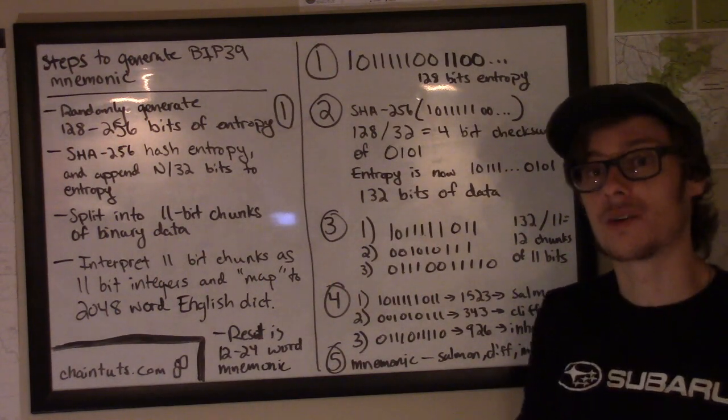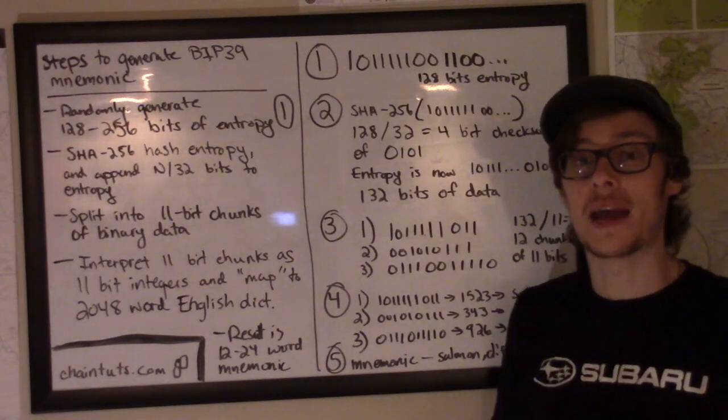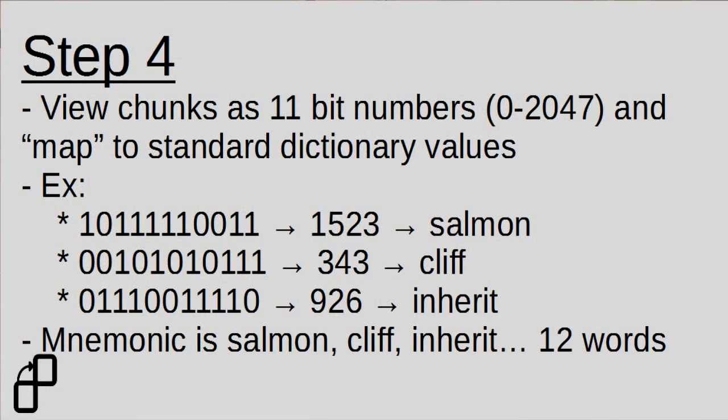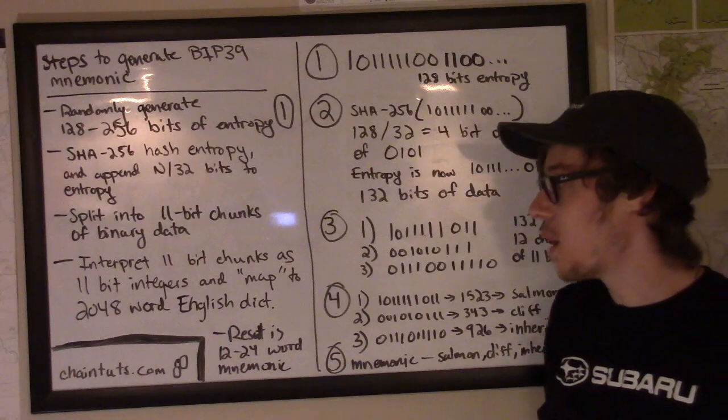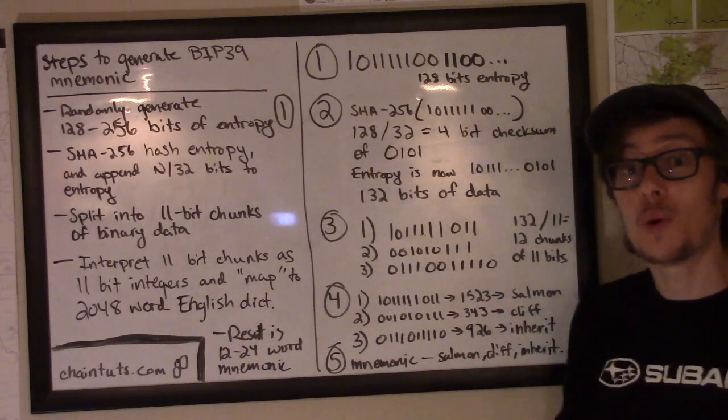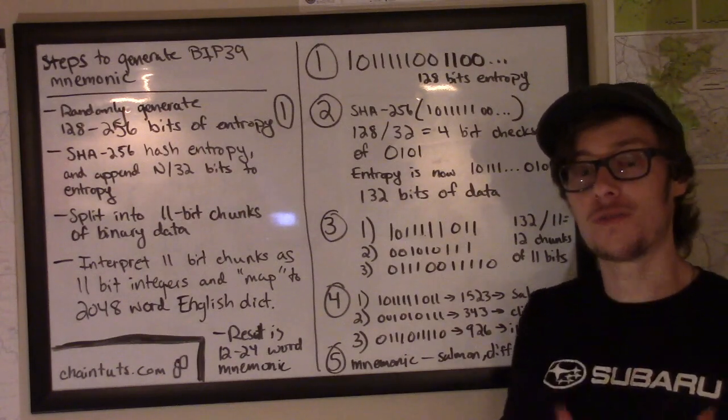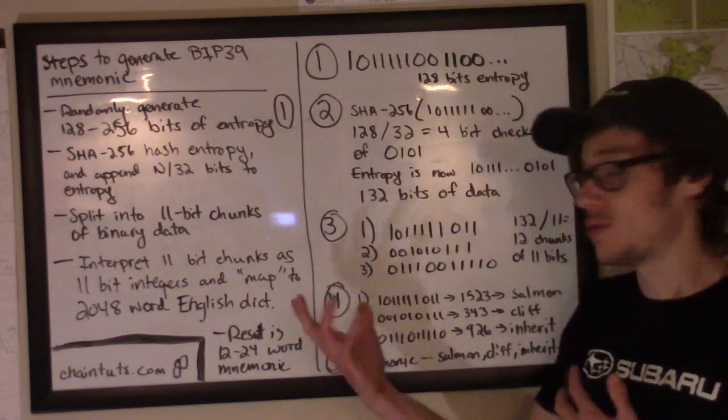Now that we have our chunks of 11 bits each, we're actually going to interpret these binary chunks as 11-bit integers. So if we use 11 bits as the size of each integer, this actually gives us a space of 2048 numbers in our address space. So we have, therefore, a 2048 word English dictionary that we map each integer value that we get from our chunks of bits of 11 bits each into this dictionary.